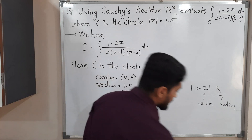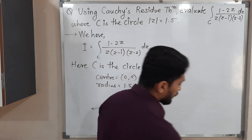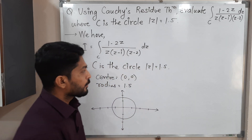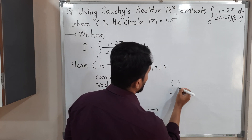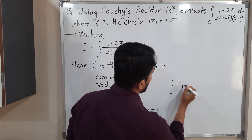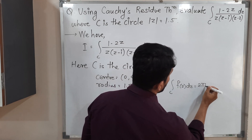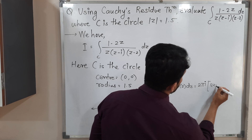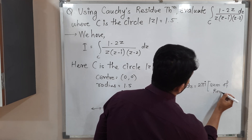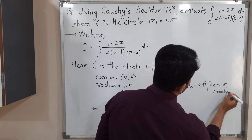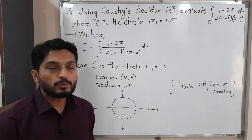Let us understand the statement of Cauchy's residue theorem. Cauchy's residue theorem says: the integration over C of f(z) dz is equal to 2πi times the sum of residues.